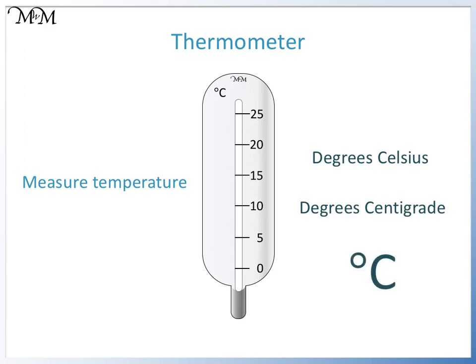We can read the temperature by seeing which number the mercury reaches. For example, this is 0 degrees C, 5 degrees C, 10 degrees C, 15 degrees C, 20 degrees C, and 25 degrees C. We have counted up in fives.